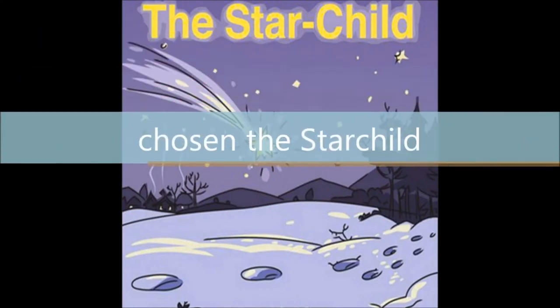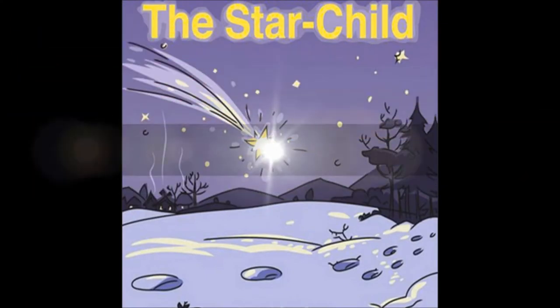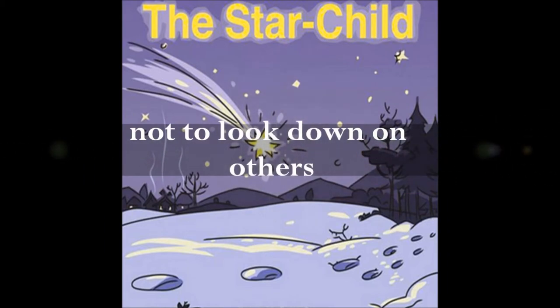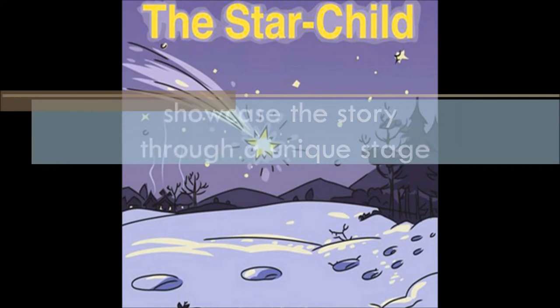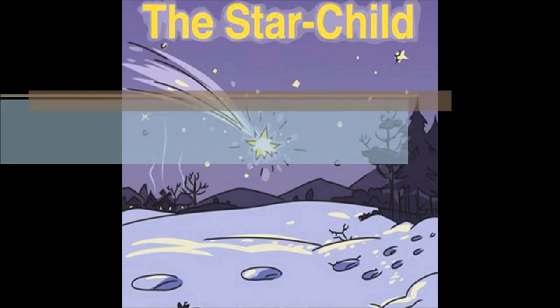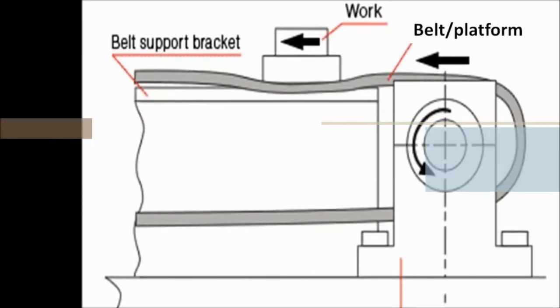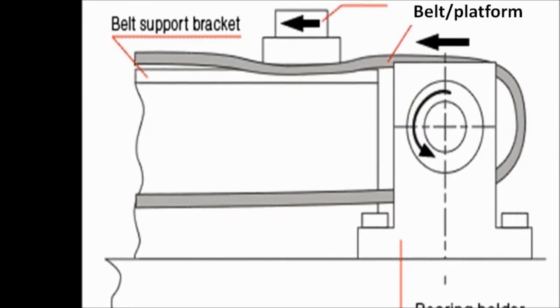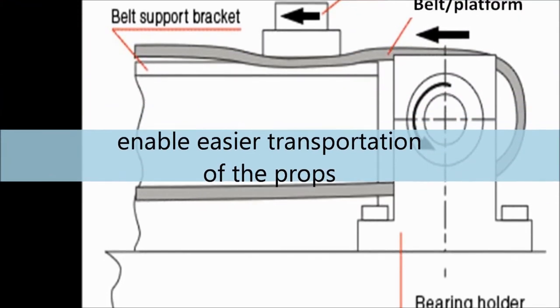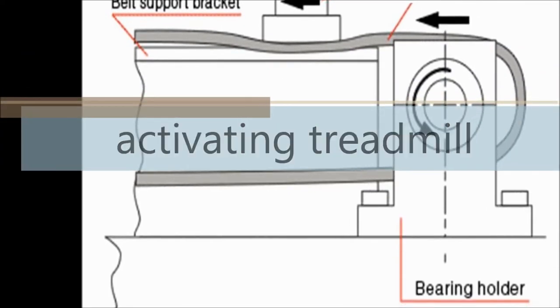Our project: we have chosen The Star Child as we feel that it teaches us about humility and not to look down on others. We liked how these moral values were being promoted throughout the story and wanted to showcase it through making a unique stage that can capture the story and captivate the audience. We have decided to use the treadmill system as we wanted a smooth transition between scenes and to let the audience experience it. We hope that these will enable easier transportation of the props from offstage to the acting area just by activating the treadmill.